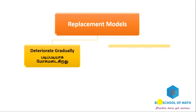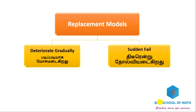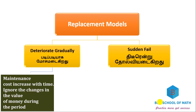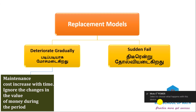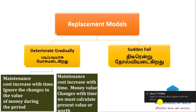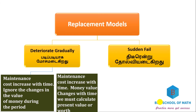The first method is: maintenance cost increases with time, ignoring changes in the value of money during the period. The second method accounts for situations where money value changes with time, so we must calculate the present value or worth. Then there is sudden failure.